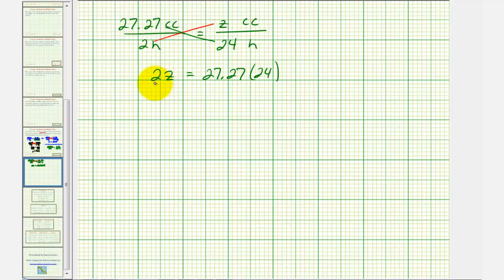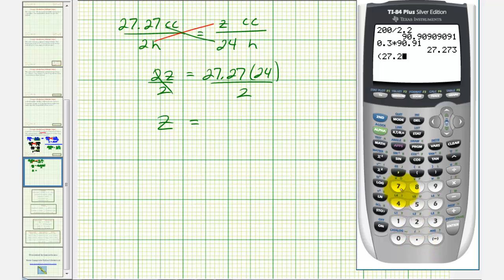To solve for z, we divide both sides by 2. Let's go back to the calculator. We have 27.27 times 24, and then divided by 2. And we'll go ahead and round this to the tenths place value. This would be 327.2.